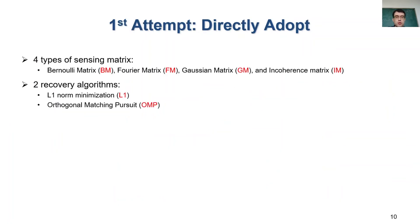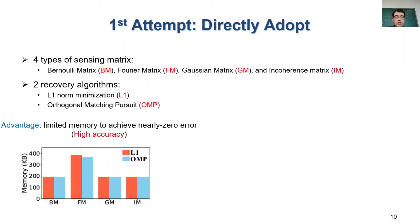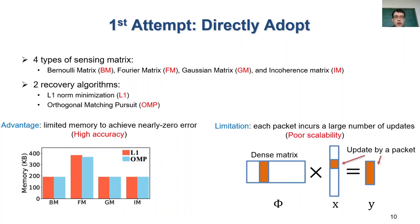So our first attempt is to use the recommended sensing matrix and recovery algorithms. We consider four different types of recommended sensing matrix and two recovery algorithms here. In the figure, we find that all the eight approaches can achieve nearly perfect accuracy for 1 million flows with only a few hundred kilobytes memory.